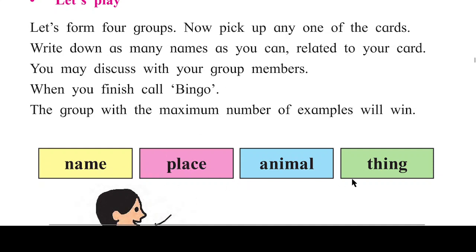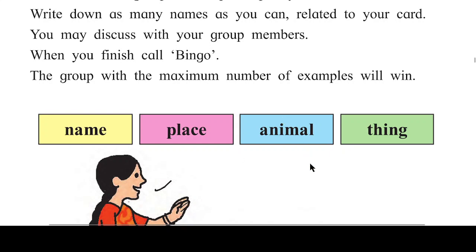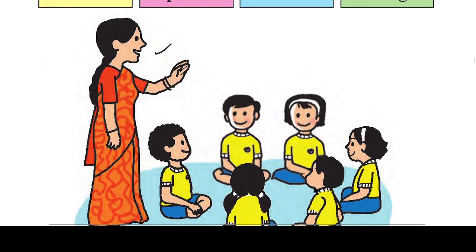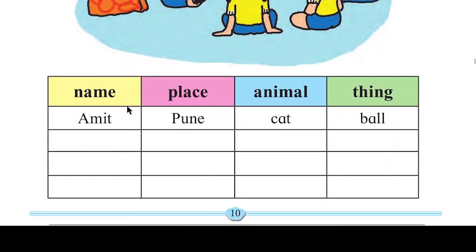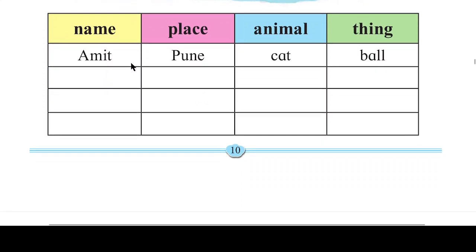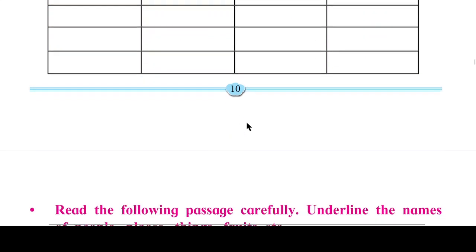You may discuss with your group members — jo bhi aapka group hai, aap unse discuss kar sakte hain. When you finish, call out 'Bingo!' The group with the maximum number of examples will win. On the board, Name has the example 'Amit', Place has 'Pune', Animal has 'Cat', and Thing has 'Ball'.